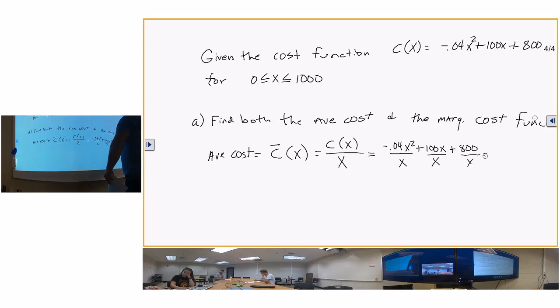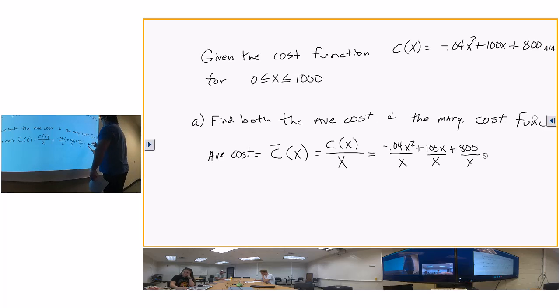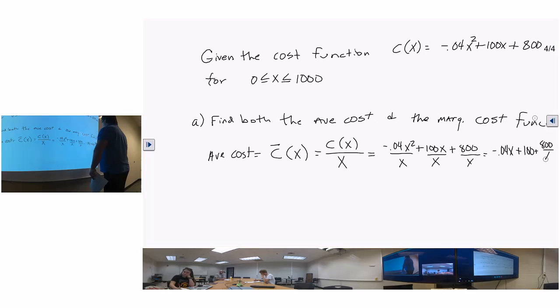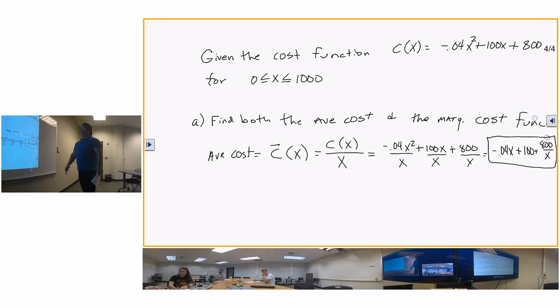Part A: find both the average cost and the marginal cost functions. Now of course, the marginal cost is going to be your first derivative.